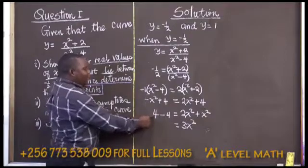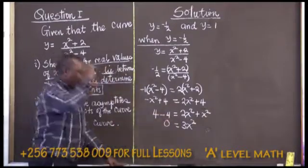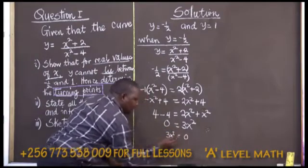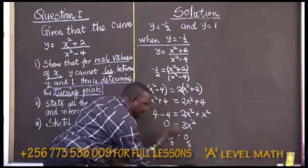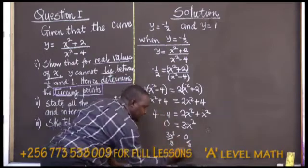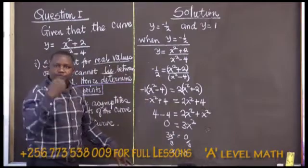However, 4 minus 4 is what? Zero. If you divide by 3 both sides, you have 3x squared equal to zero. Divide by 3 by 3. You end up getting x equal to what? x equal to zero. Isn't it? x equal to zero.